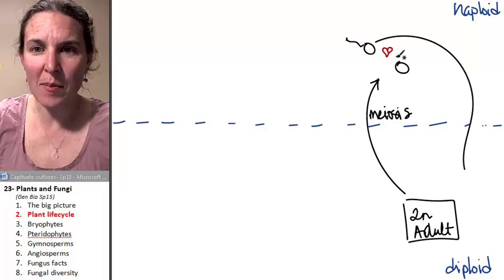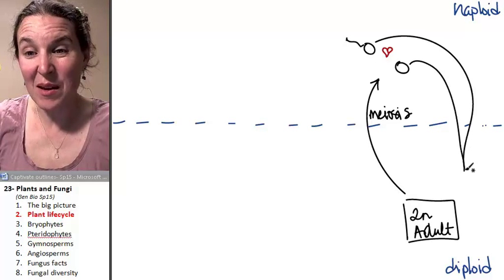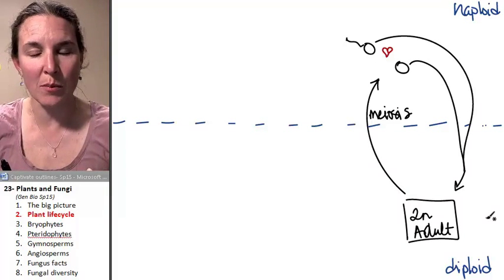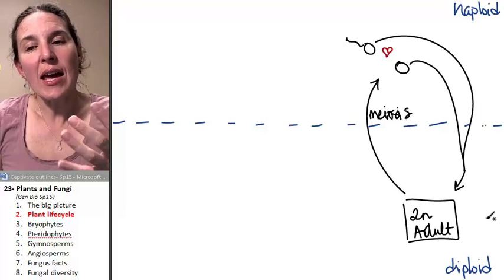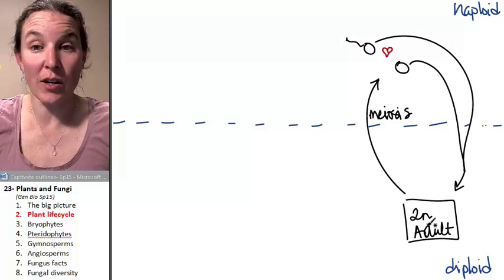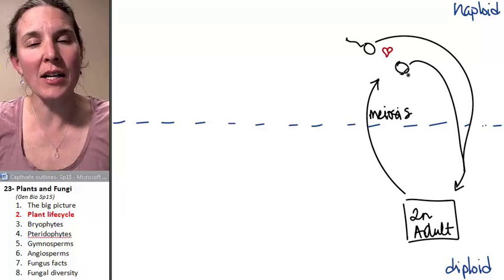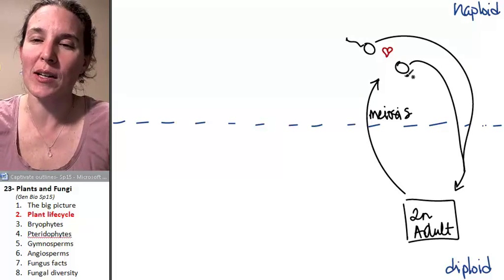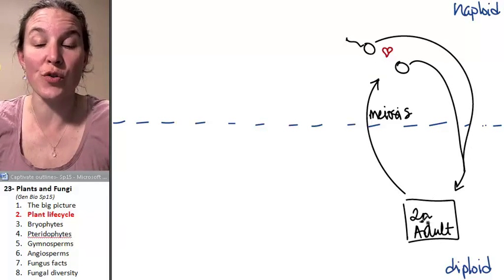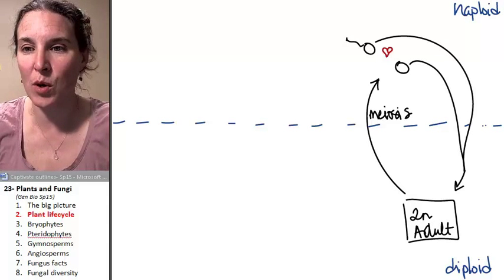But then what do they become? They become a diploid critter. They become a diploid zygote which grows into a diploid adult. So you can see here that we have this process whereby a diploid critter makes a single celled haploid gamete that combines with somebody else's single celled haploid gamete that then join to form a zygote which goes through mitosis to make an adult. Totally straightforward. Absolutely what you would expect.